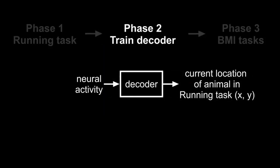In phase two, we trained such a decoder, then combined it with a fast neural signal processing system, giving us a real-time end-to-end hippocampal brain machine interface.